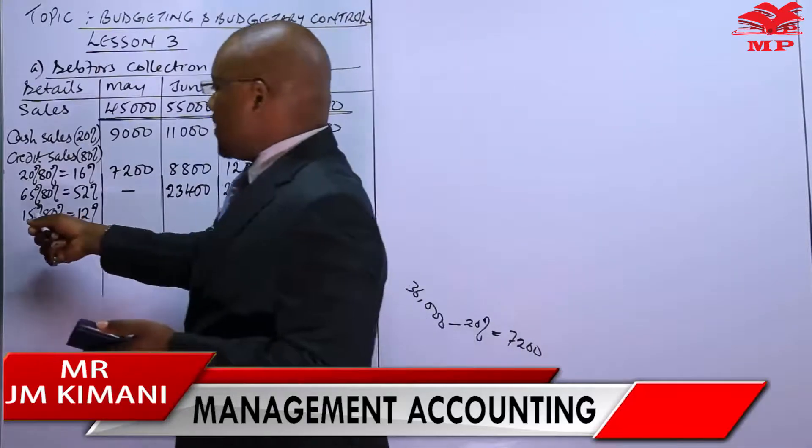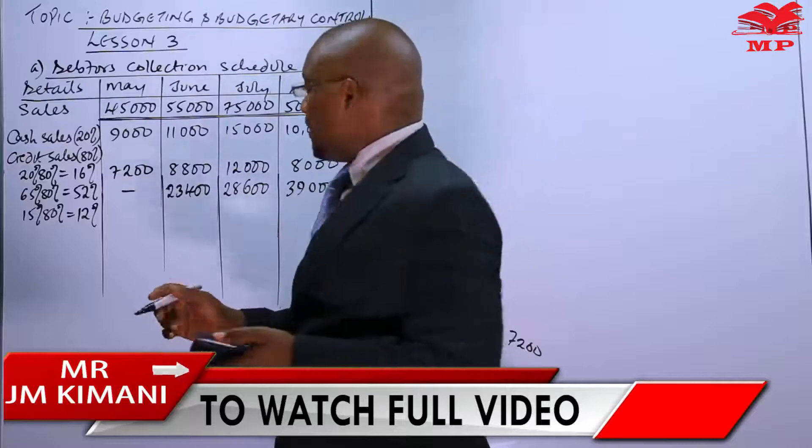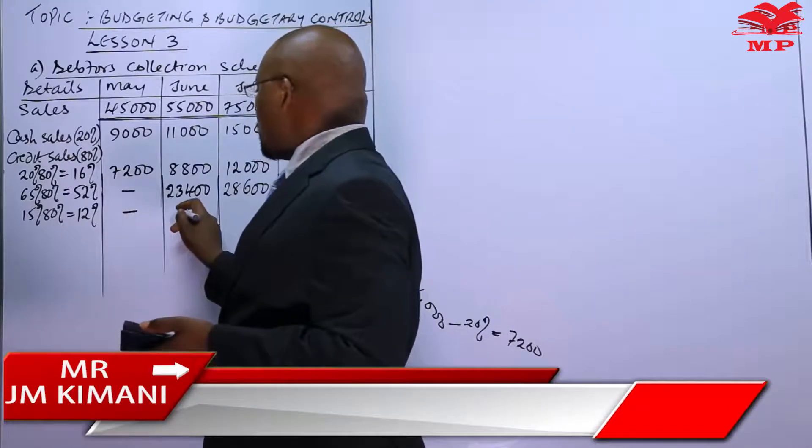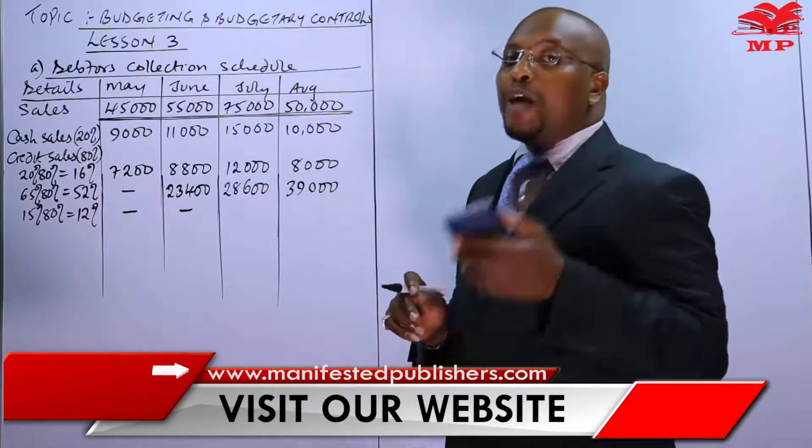Then this 15% you have been told is to be collected two months later. Two months later meaning for the month of May we shall not collect in May, we shall not collect in June, we are going to collect in the month of July.